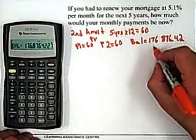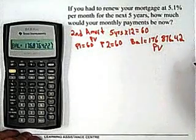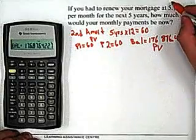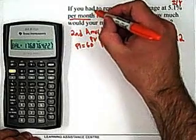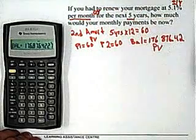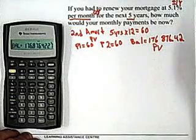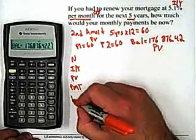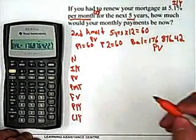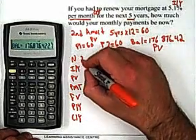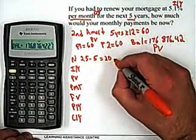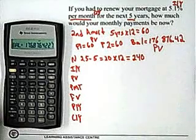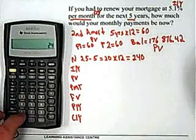This balance will become our present value in the next calculation. The 5.1 is going to be our new IY. Again, it's per month so CY will remain 12. The mortgage was a 25-year mortgage in total, and we just finished the first 5 years, so there are 20 years remaining. We're going to make a payment once a month, 12 times a year, so there are 240 payments remaining for our N. Let's go second quit — so there's our N, 240 N.